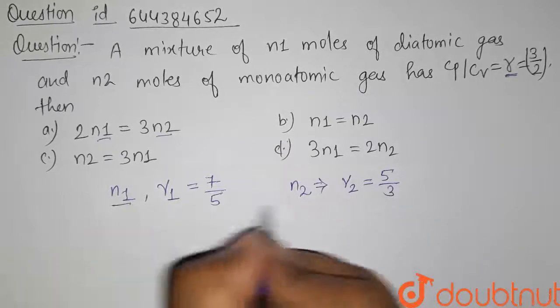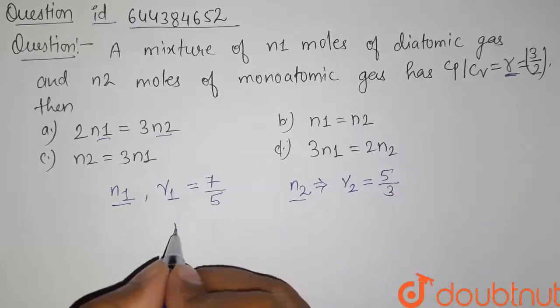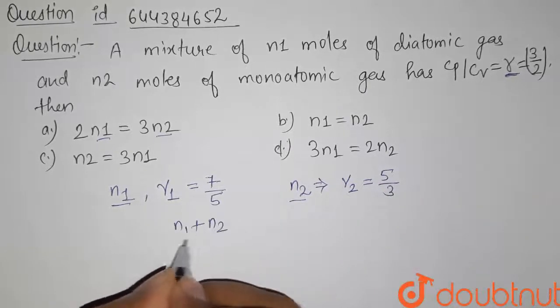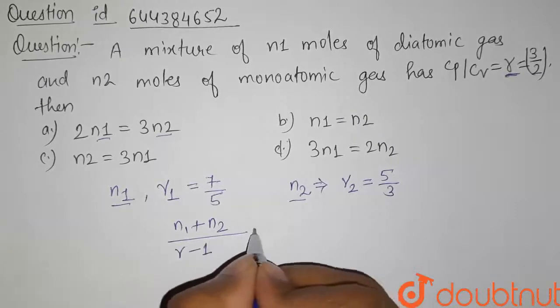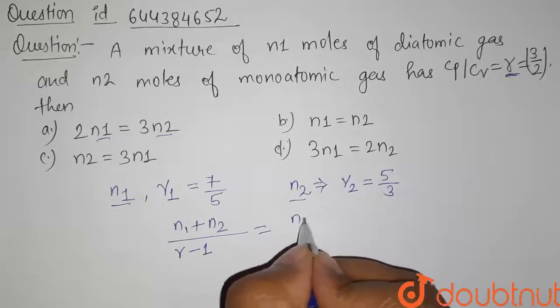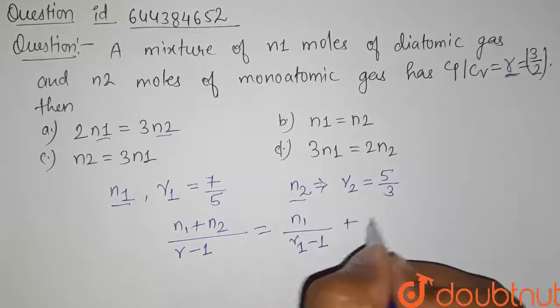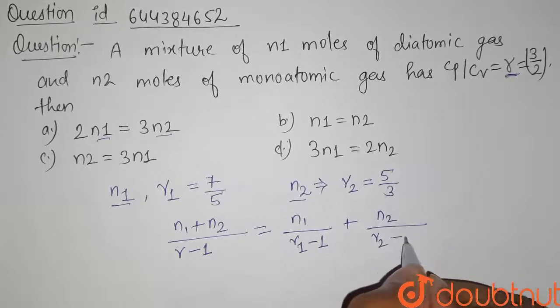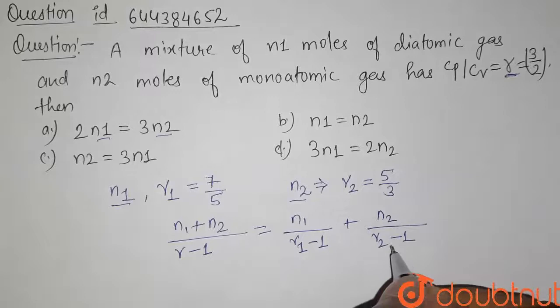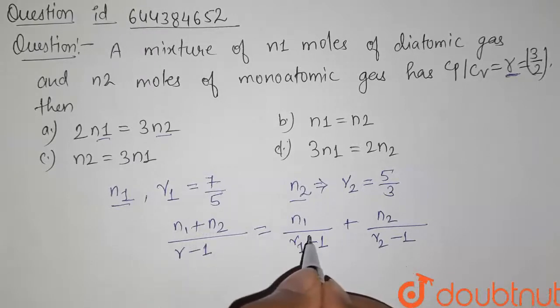Then the relation between N1, N2, and gamma is given by (N1 + N2)/(gamma - 1) equals N1/(gamma1 - 1) plus N2/(gamma2 - 1). This is the relation between specific heat and number of moles in a mixture.